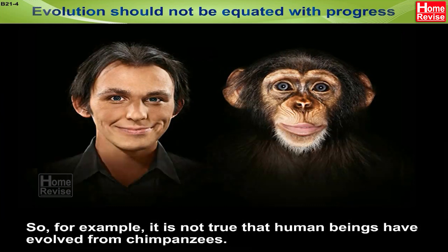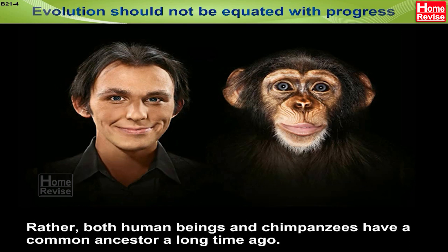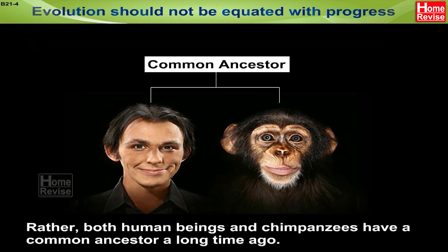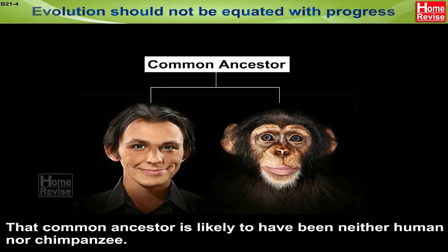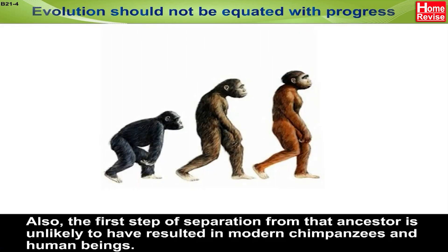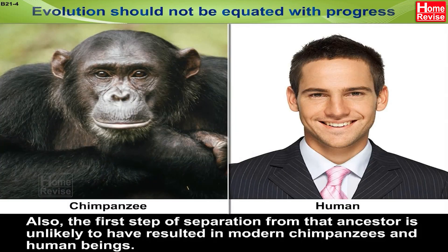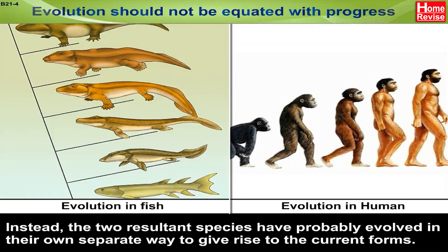For example, it is not true that human beings have evolved from chimpanzees. Rather, both human beings and chimpanzees have a common ancestor a long time ago. That common ancestor is likely to have been neither human nor chimpanzee. The first step of separation from that ancestor is unlikely to have resulted in modern chimpanzees and human beings. Instead, the two resultant species have probably evolved in their own separate ways to give rise to the current forms.